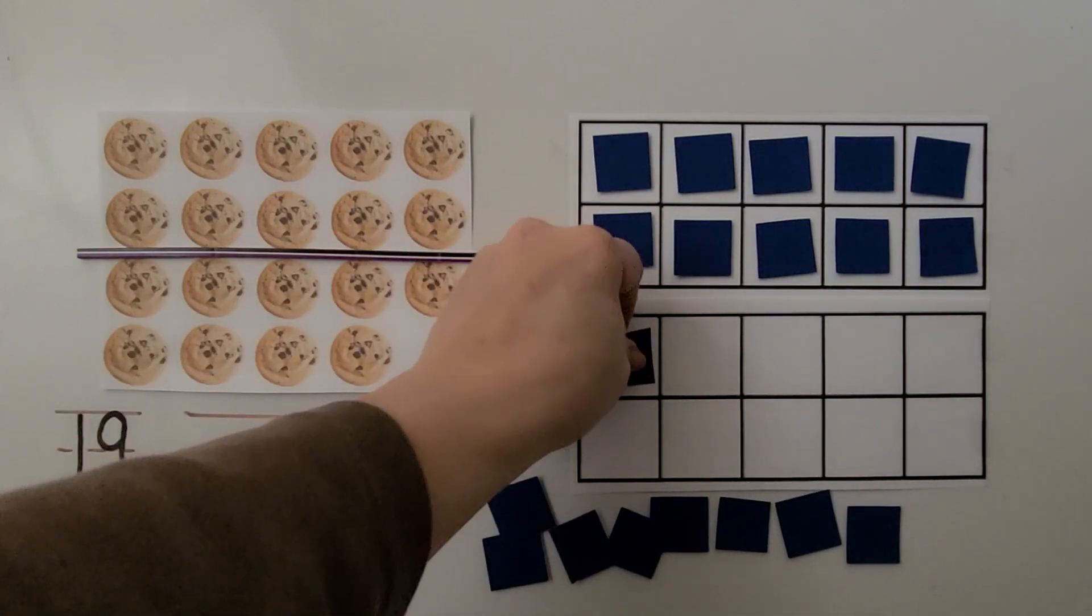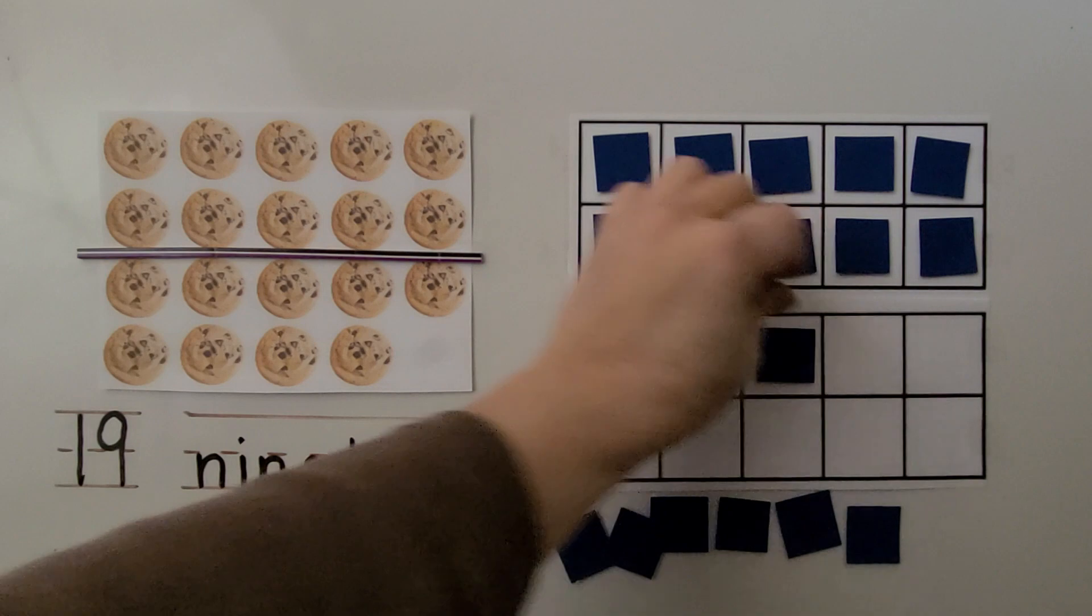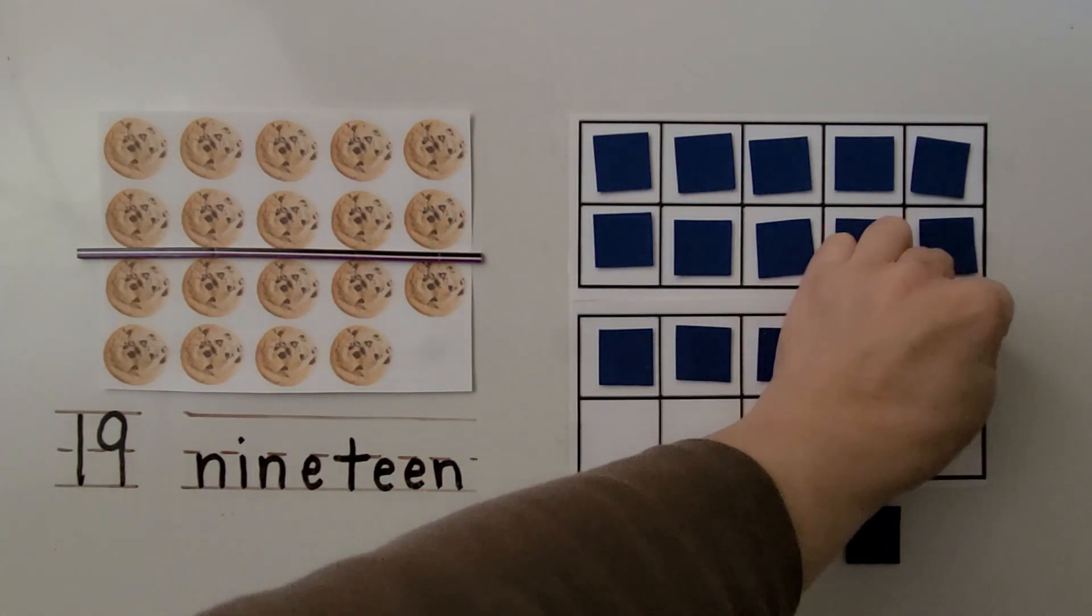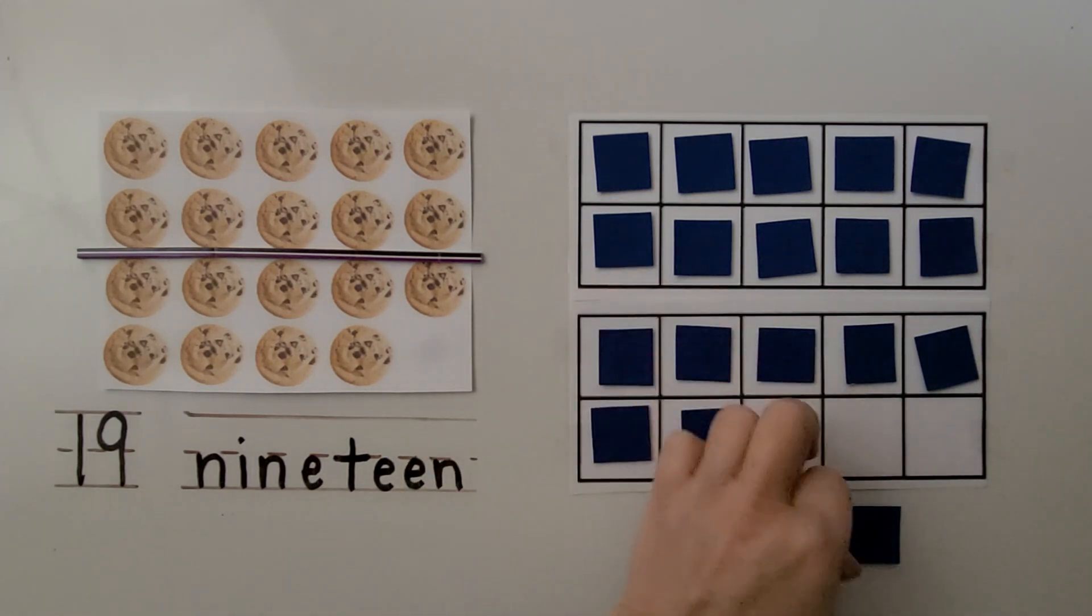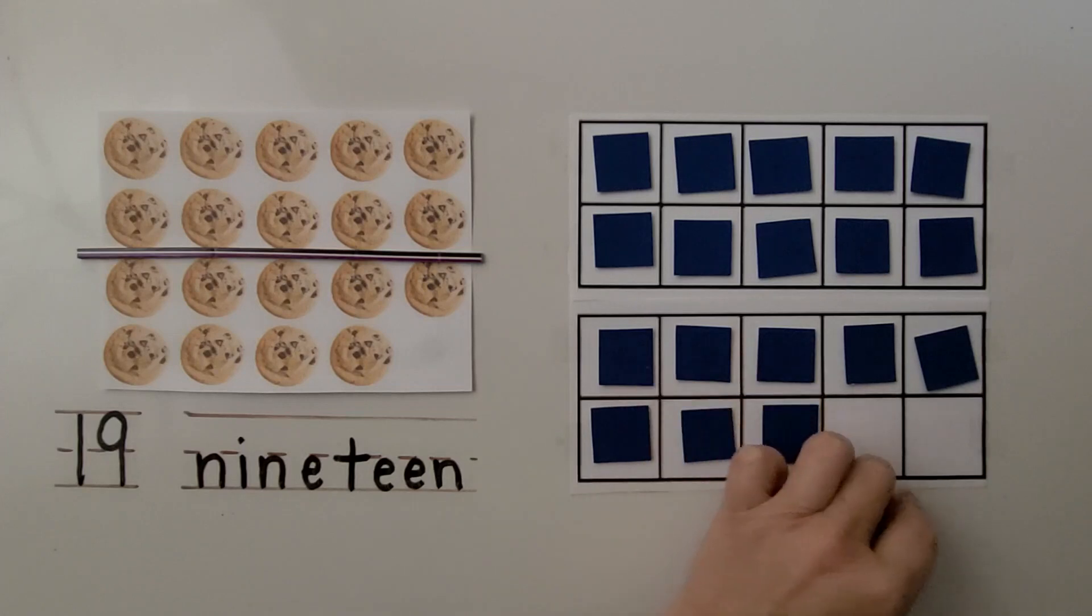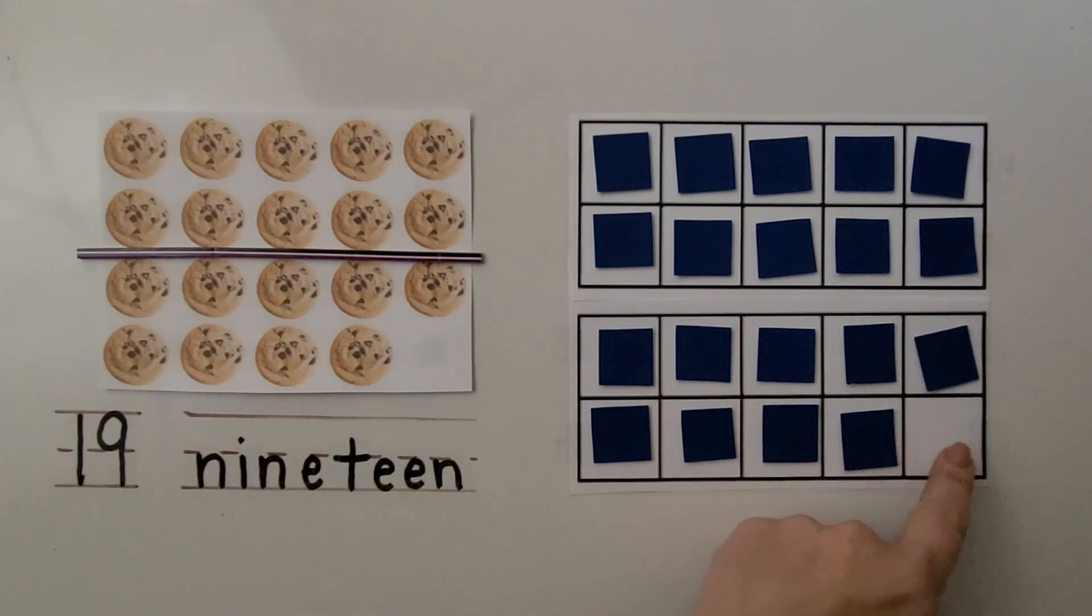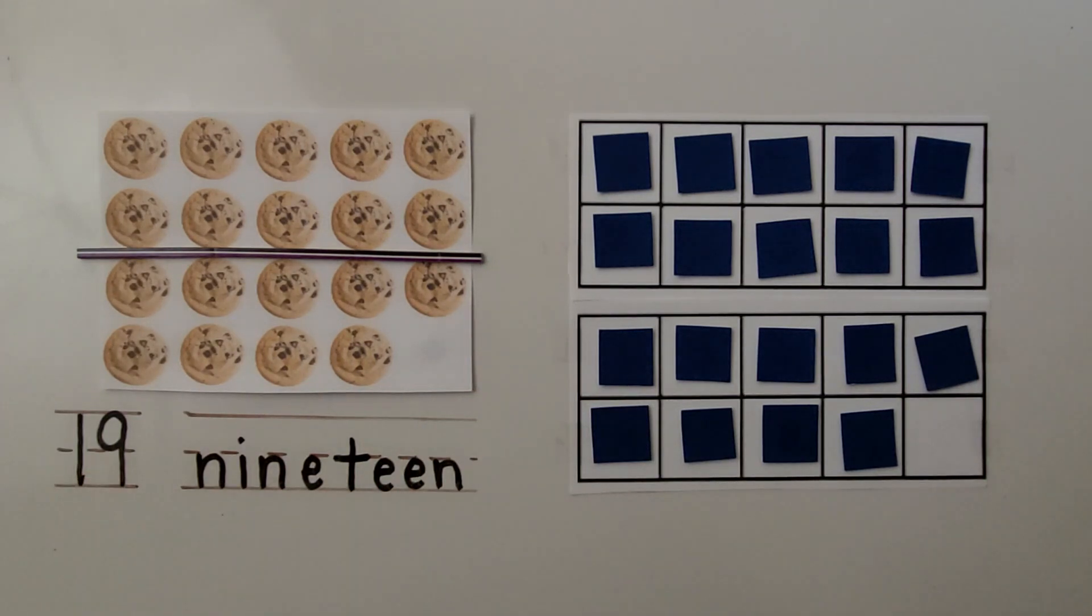We have 10, 11, 12, 13, 14, 15, 16, 17, 18, 19. We know this 10 frame has 9 in it because we have one missing here, right? So that's a 9. We have a 10 and a 9 which makes 19.